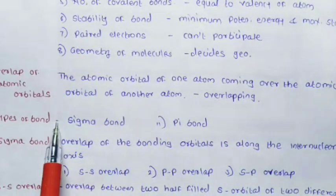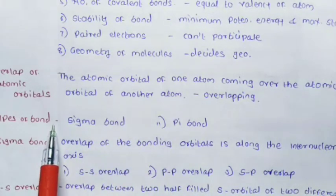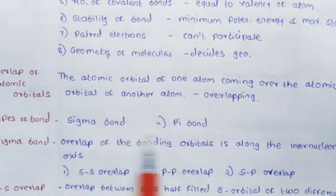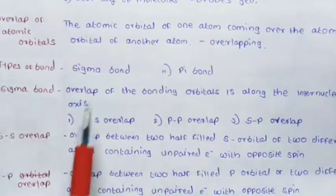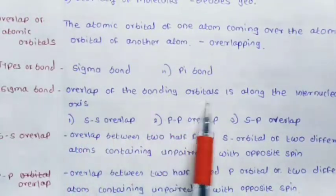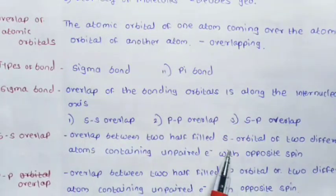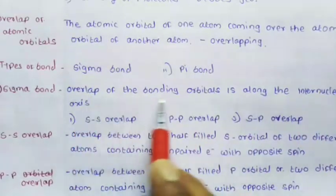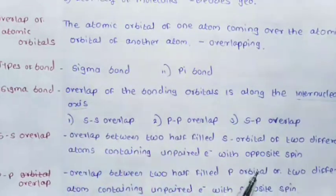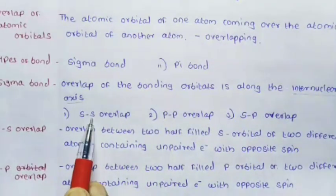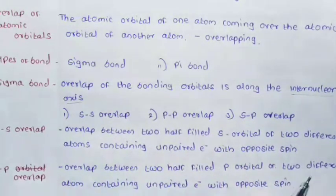The types of bonds in covalent or valence bond theory are sigma bond and pi bond. Sigma bond: the overlap of bonding orbitals along the internuclear axis is called a sigma bond. Sigma bond involves SS overlap, PP overlap, and SP overlap.